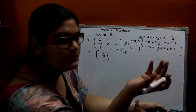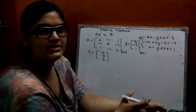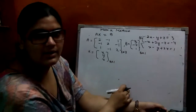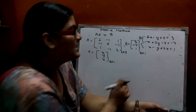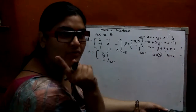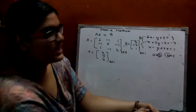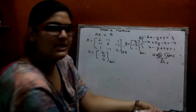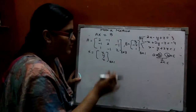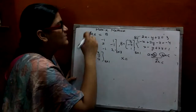Remember, A is 3 by 3 and B is 3 by 1. Multiplication can only be done if the column of the first matrix equals the row of the second — then only multiplication can take place. To find out the value of X, Y, Z — that is the X matrix — it becomes A inverse times B.